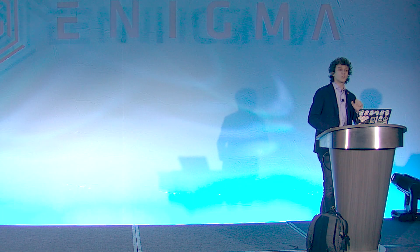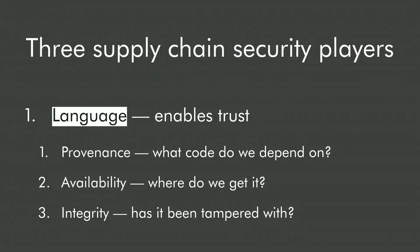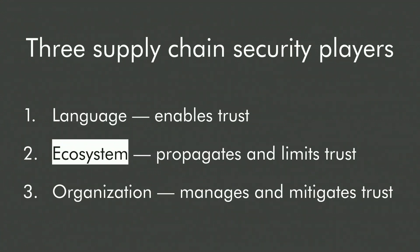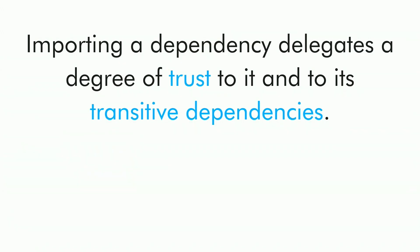So this is what the language has to do to enable the supply chain to be secure. Next, on top of this tooling, the ecosystem will develop and build trust relationships. This is the ecosystem of actual software dependencies. Why are trust relationships important? Every time you import a new dependency or update an existing one, you delegate a degree of trust to that dependency and to its transitive dependencies.